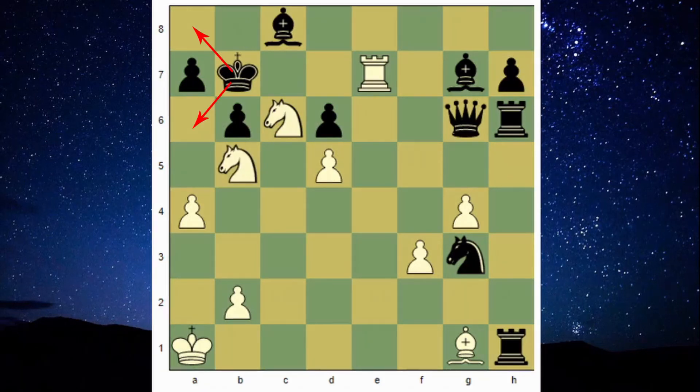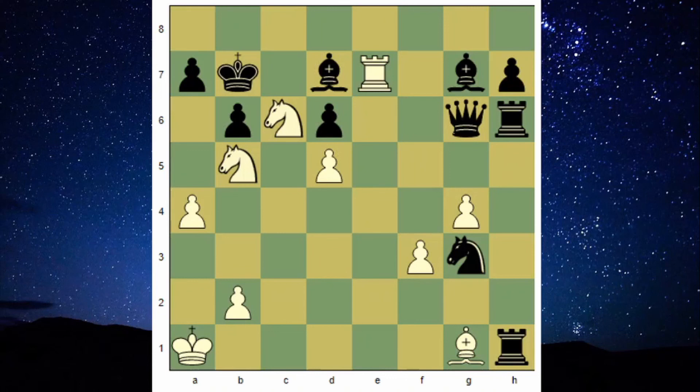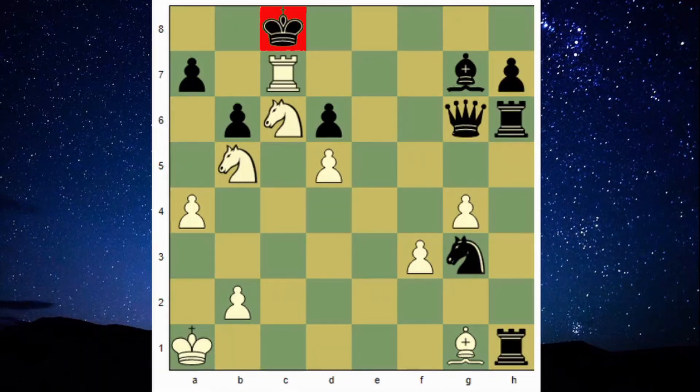So bishop to d7, but after rook takes d7 check, king to c8, rook to c7 is checkmate.